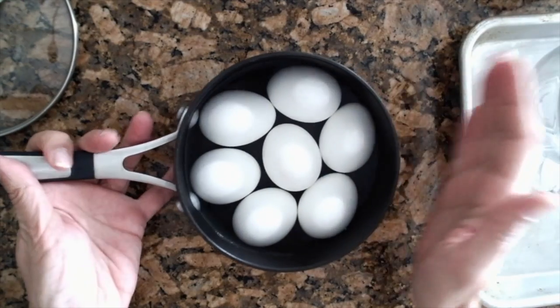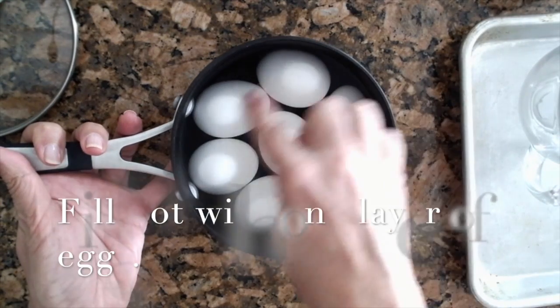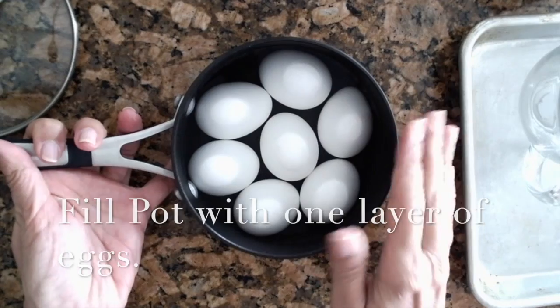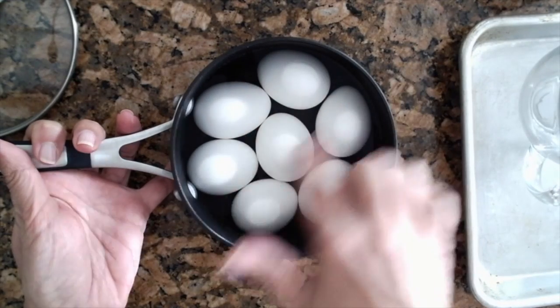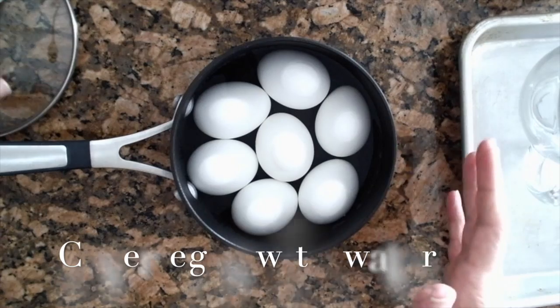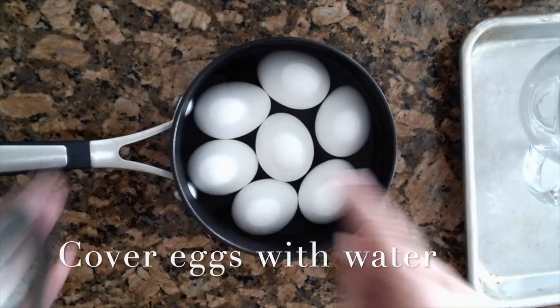Quick reminder: fill your pot with one layer of eggs, then add water that covers them. You're going to put it on your stove and bring it to a boil.